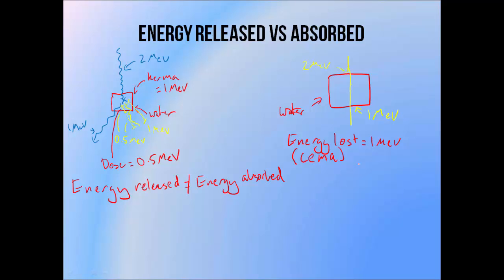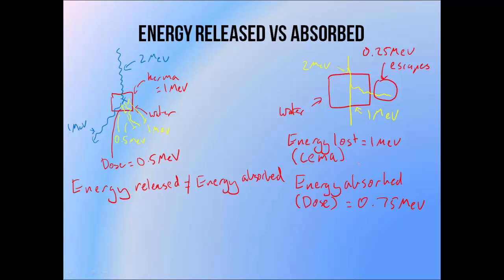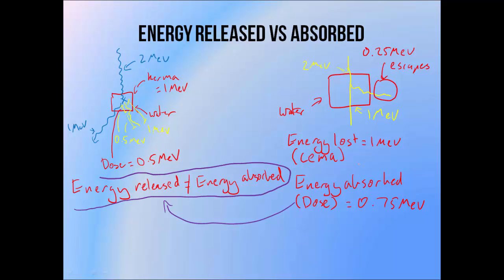If this electron undergoes a hard collision, it can give a significant amount of energy to another electron, which may be enough to escape the volume. This knock-on electron carries 0.25 MeV outside the volume. This means that while the amount of energy released inside this volume may be 1 MeV, the amount of energy absorbed is only 0.75 MeV, since that 0.25 MeV escapes. So if electrons are escaping from a volume — for example an ionization chamber active volume — the Kerma is not equal to the dose, and the SEMA is not equal to the dose either.